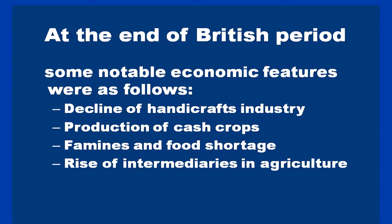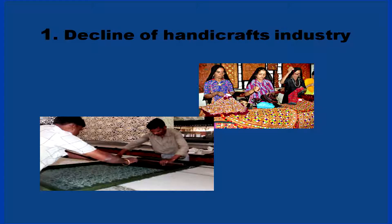Some of the important features of India at the time of independence were: the decline of handicrafts industry, the production of cash crops, famines and food shortage, and the rise of intermediaries in agriculture. First of all, we can understand how far the decline of the handicraft industry affected the Indian economy.